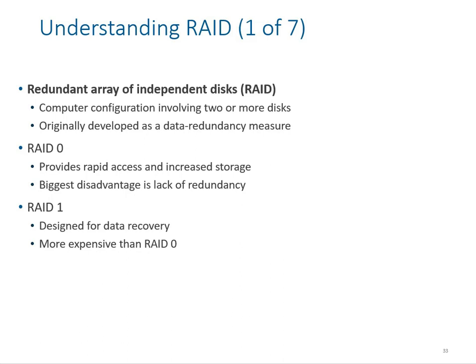RAID stands for Redundant Array of Independent Disks. It involves two or more disks depending on the RAID level. RAID level 5 requires more than two hard drives for parity. RAID level 0 provides rapid access and increased storage space but lacks redundancy — if you have three drives, all are used for data with no backup. RAID level 1 is designed for data recovery; it's more expensive because one drive continuously mirrors the data written to the first drive.